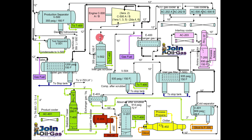The gas from this scrubber flows to the gas compressor. The gas compressor will compress the gas and increase the pressure needed at a later stage for the absorption process, because absorption is favorable at high pressure. The discharge of this compressor then flows to the compressor after-scrubber. The pressure is now increased up to 935 psig. Any liquid separated from this scrubber is sent back to the condensate stabilization unit.